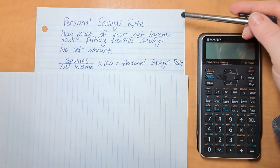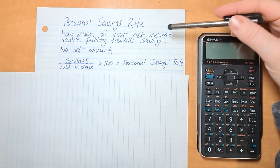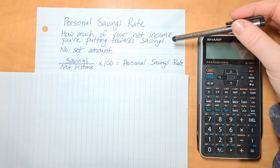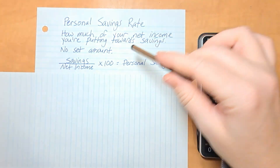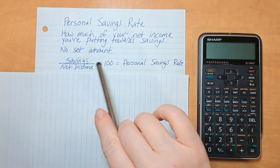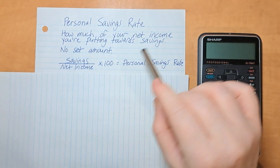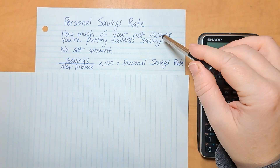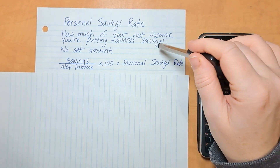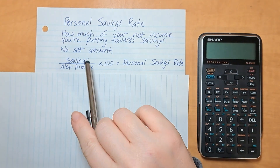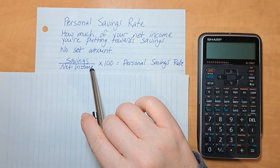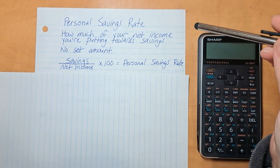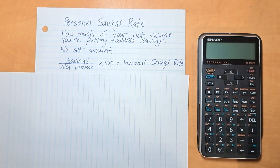Your personal savings rate is how much of your net income you're putting towards savings — pretty straightforward. There's no set amount, no percentage that's right or wrong; it's based on your own numbers. The formula is: savings divided by net income, times 100, equals your personal savings rate.